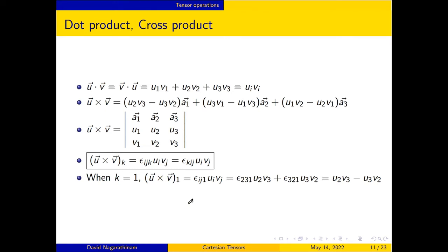Let us consider the representation of the dot product between two vectors using tensor notation. U vector dot V vector equals V vector dot U vector, which upon expanding is u1*v1 plus u2*v2 plus u3*v3. In tensor notation this is u_i*v_i, with repeated index i from 1 to 3 representing the dot product.